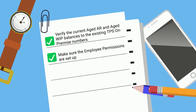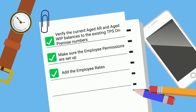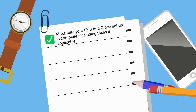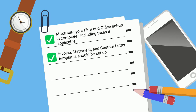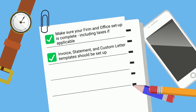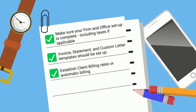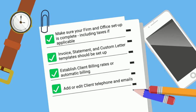You'll also want to make sure the employee permissions are set up, add the employee rates, and work code rate levels are important too — especially the expenses, as they now have the possibility to have unique preset rates. Make sure your firm and office setup is complete, including taxes if applicable. Invoice, statement, and custom letter templates should be set up with the new set of variables. Establish client billing rates or automatic billing, as TPS Cloud now permits multiple monthly, quarterly, or annual automatic billing. Add or edit client telephone numbers and emails, as TPS Cloud offers an unlimited number of each.